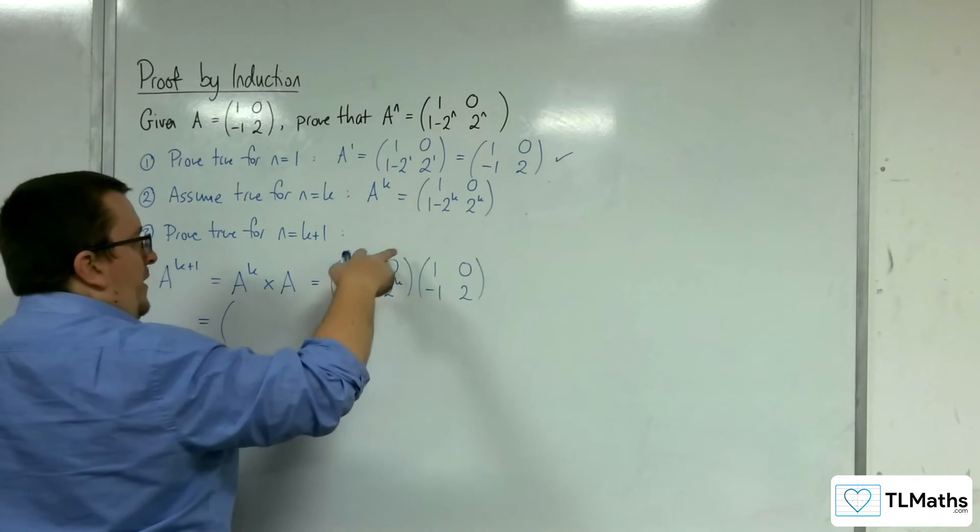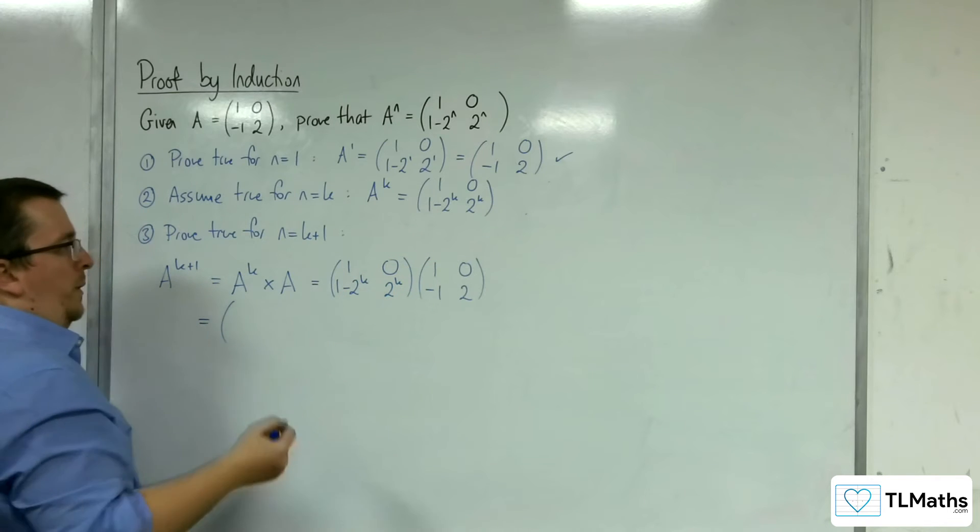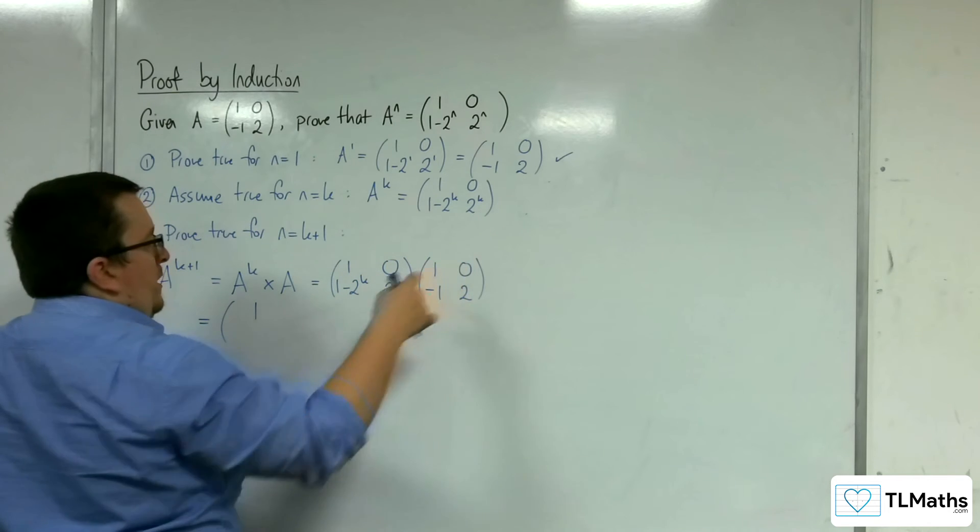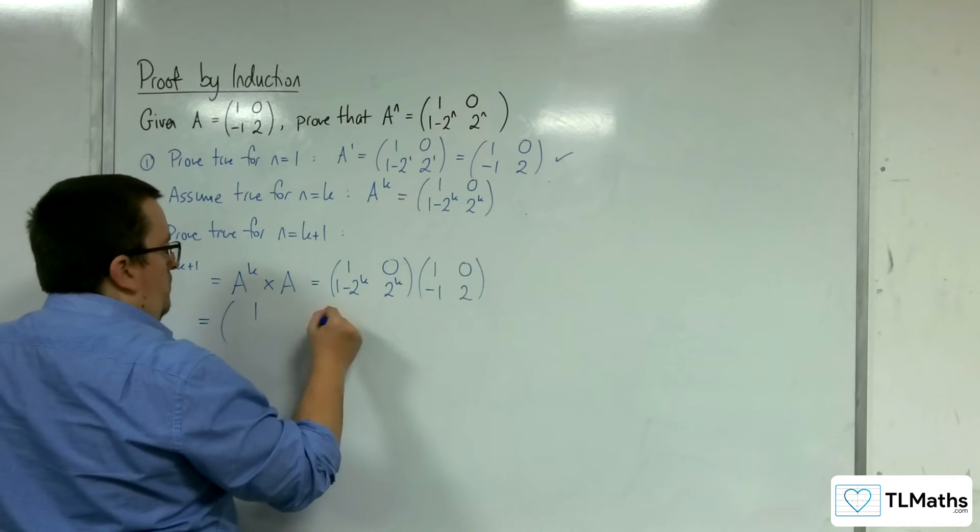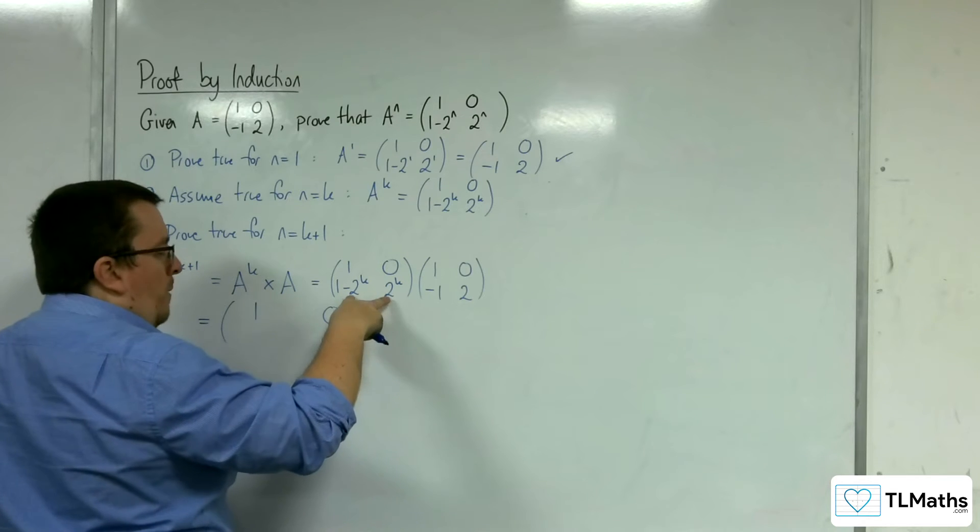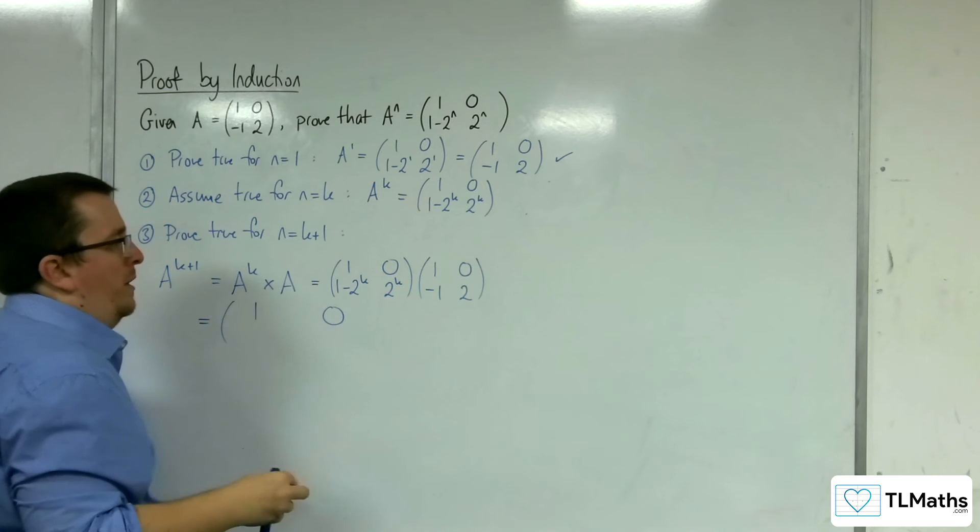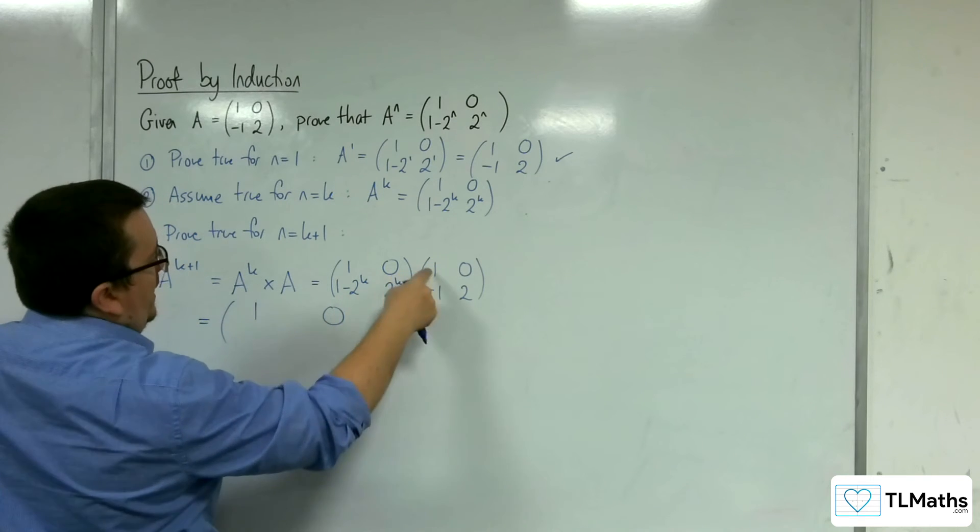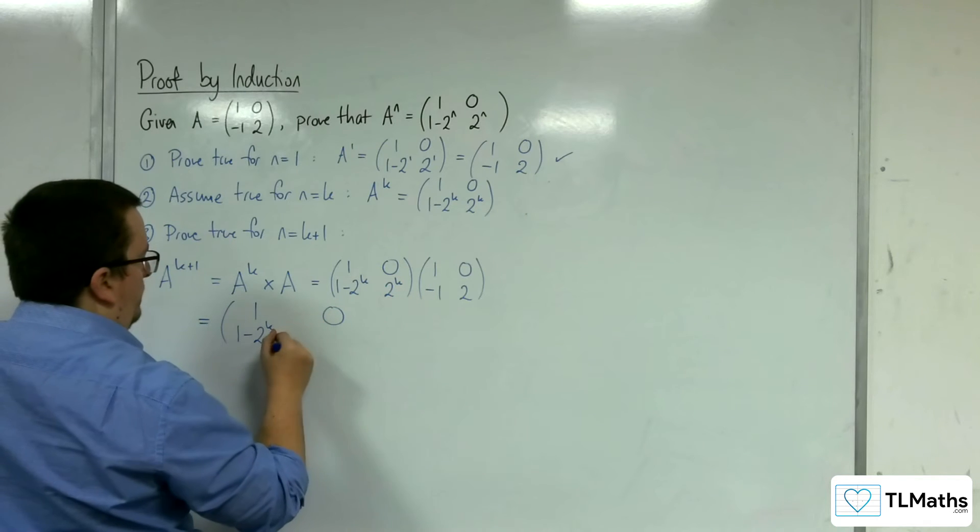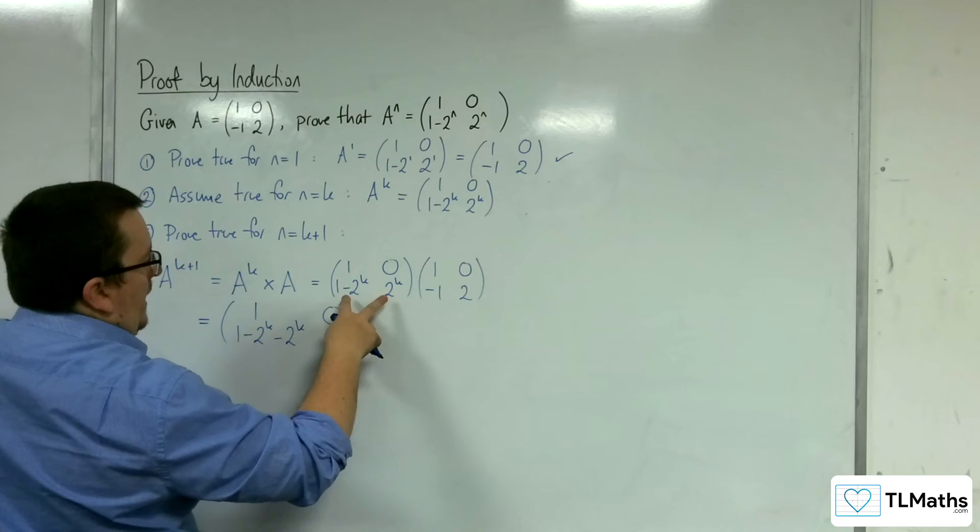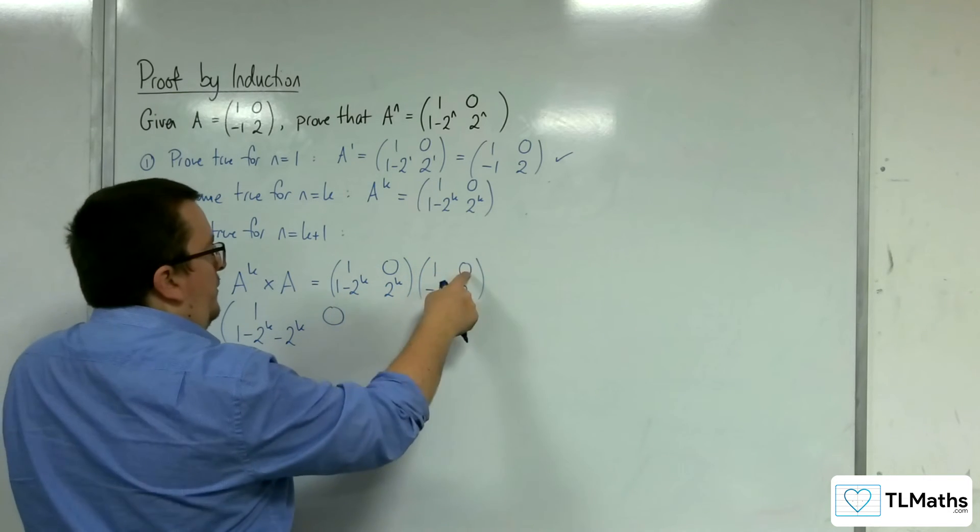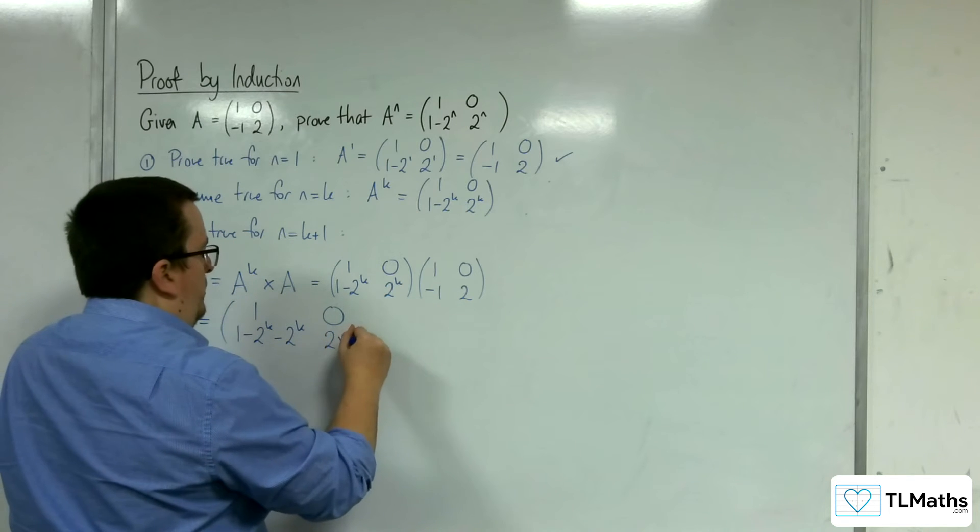We've got 1, 0 multiplying with 1, 0, which gives us 1 and 0. We've got 1 minus 2^k and 2^k multiplied by 1, minus 1. So 1 minus 2^k times 1, and then 2^k times minus 1. Then the bottom row multiplied by the final column gives us 0, and 2^k times 2, so 2 times 2^k.